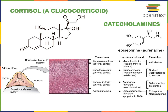Cortisol is produced in response to ACTH — adrenocorticotropic hormone from the anterior pituitary. ACTH binds to receptors on the surface of cells in the zona fasciculata, the middle layer of three layers in the adrenal cortex, and these cells then synthesize cortisol. Cortisol travels throughout the blood, binding to glucocorticoid receptors in cells all throughout the body. It produces a long-term resistance phase response to stress, one primary effect being increased blood glucose levels — hence glucocorticoid.